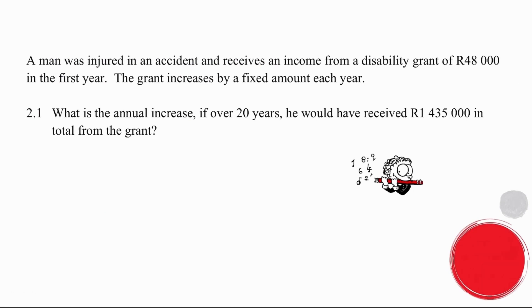In the first question, you are told to consider a 20 year period which produces an accumulated amount of 1,435,000 rand in total from the grant, and with that information you are asked what the annual increase will be of his amount that he receives starting with 48,000 rand. Pause the video and see if you can answer the question and then I'll help you with it.